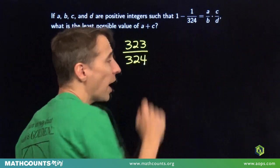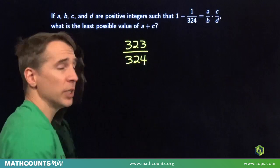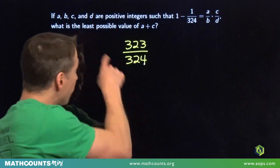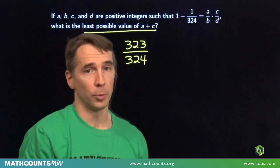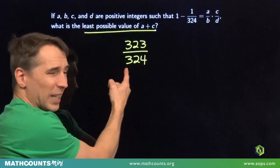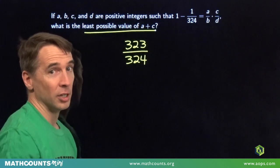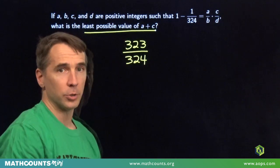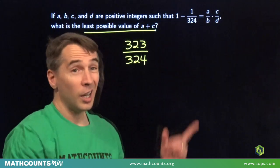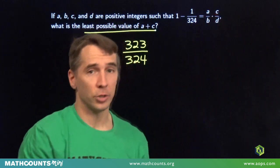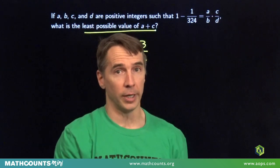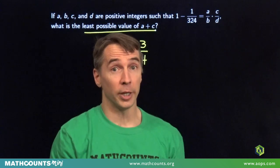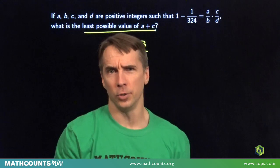Now we're looking for two fractions whose product is 323 over 324, and we want these numerators to be small because we're looking for the least possible value of the sum of those numerators. But we can't simplify this fraction, so we need to find two small numbers whose product is 323. Now right away I see I could put 1 and 323 in there as those numerators, but 323 is not very small. The sum of those numerators would be 324.